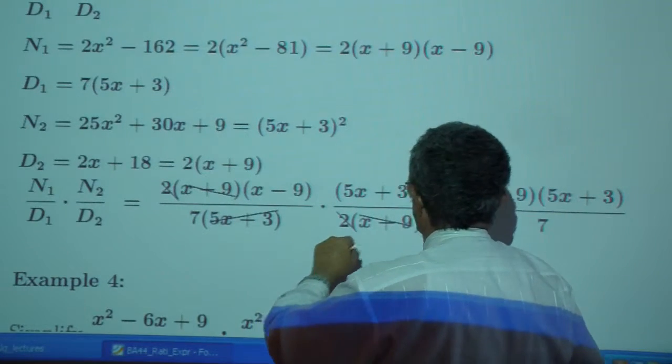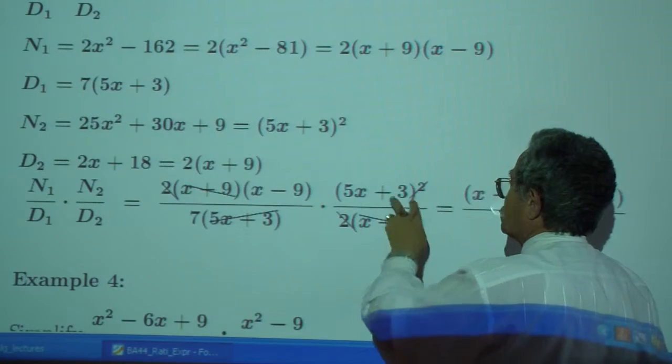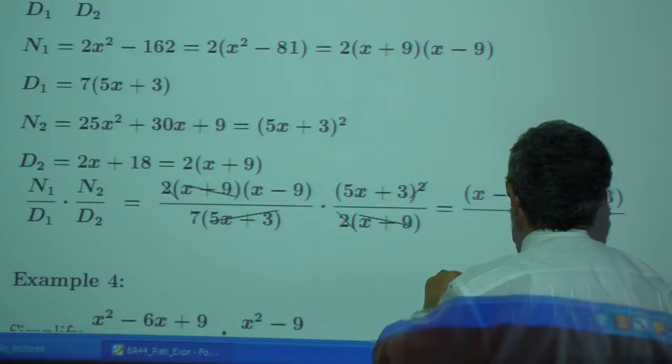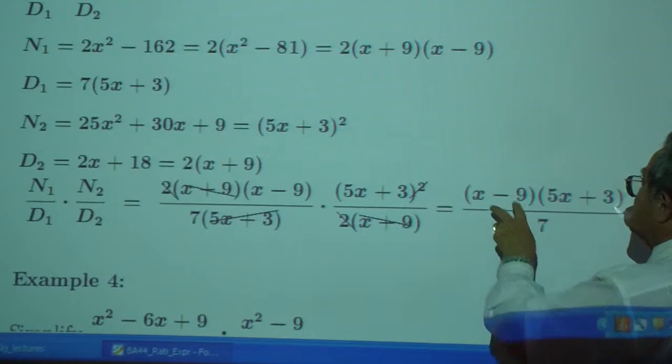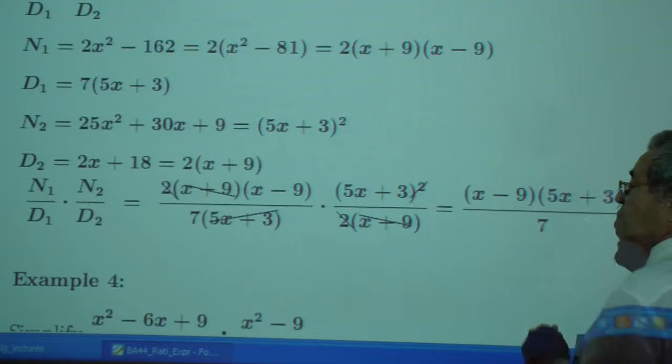And the x plus 9 drops out, the 2 drops out, the 5x plus 3 drops out. I have two of them here, I'm left with one of them. That is supposed to give me x minus 9, times 5x plus 3, over just 7.